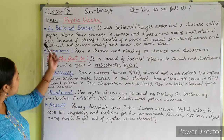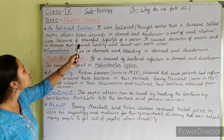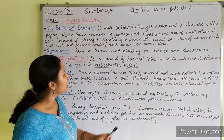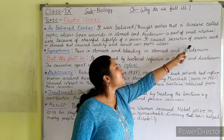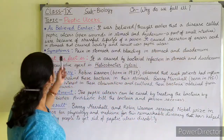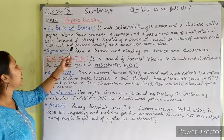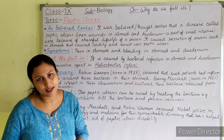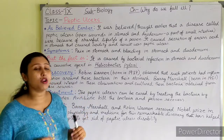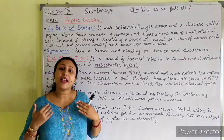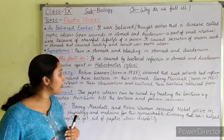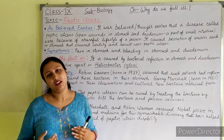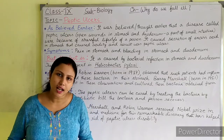So this disease called peptic ulcers — it was believed earlier that because of a stressful lifestyle, it caused secretion of excess acid in the stomach, which caused acidity, and the result was peptic ulcers. As a result, acidity occurs and causes peptic ulcers.